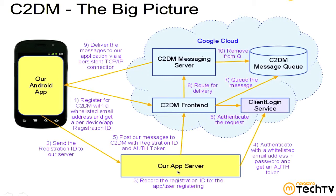So step one requires this to be the same email address as the one used in step zero when signing up for an account. The registration ID is tied to the email address, and the auth token is also tied to the same email. If they don't match, step six will fail. In the app I'm going to demo, we make the email address configurable on the server — step zero for us is to go to our server and fetch that email address so it's not hard-coded in the app.